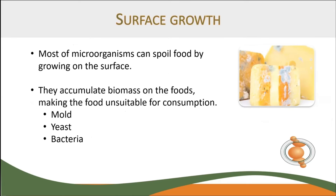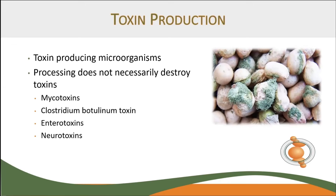Most microorganisms can spoil food by growing on the surface. They simply grow and accumulate biomass on food, making it unsuitable for consumption — including mold, yeast, and bacteria. Some of those produce mycotoxins, which are toxic compounds naturally produced by certain types of mold. Mold that can produce mycotoxins grows on many different types of foodstuffs, such as cereals, dried fruits, nuts, and spices. Mold growth can occur before or after harvest, during storage, on or in the food itself, and usually under warm, damp, and humid conditions. Most mycotoxins are chemically stable and can survive food processing.